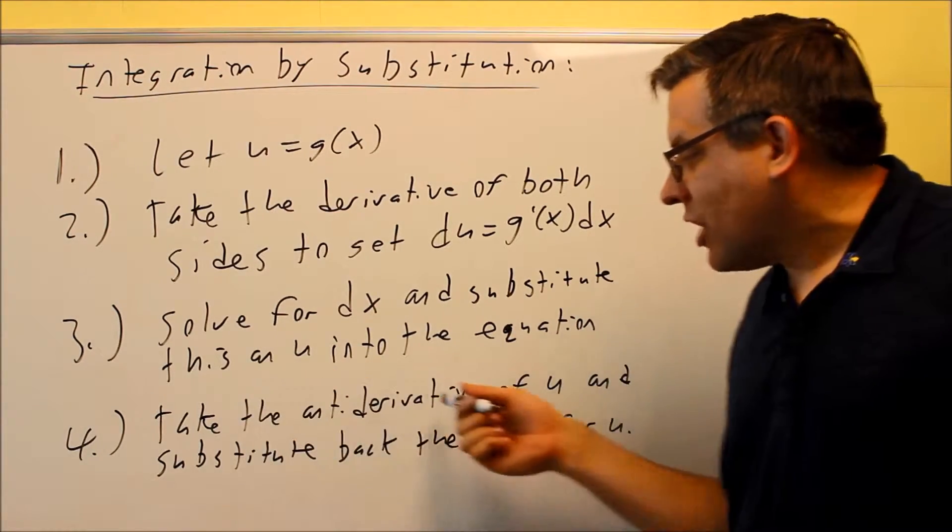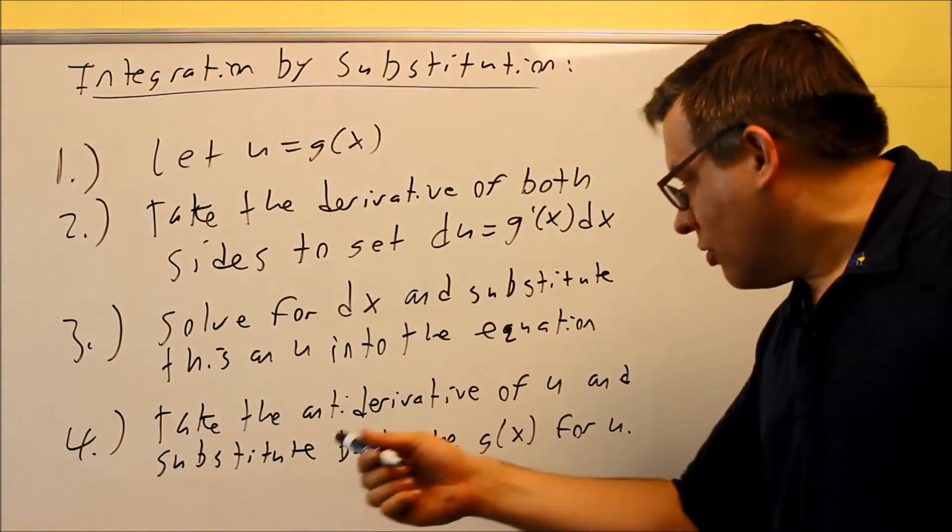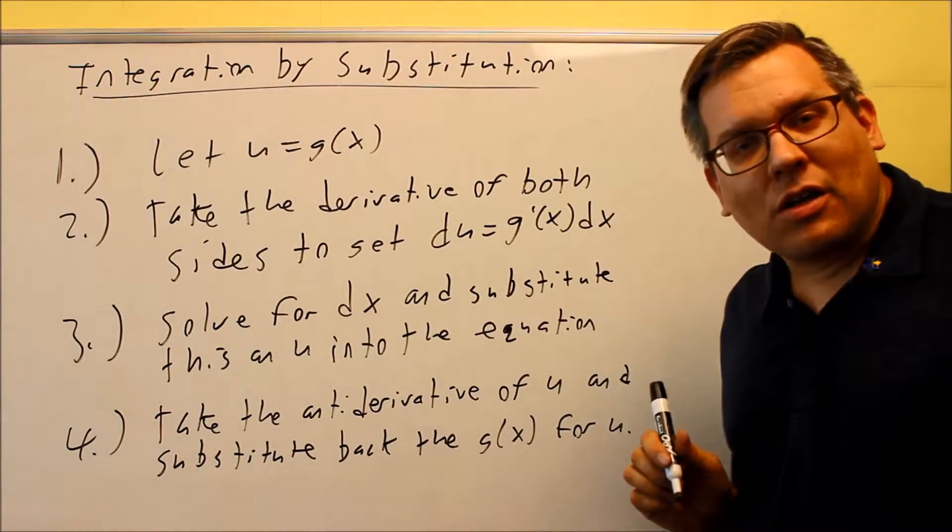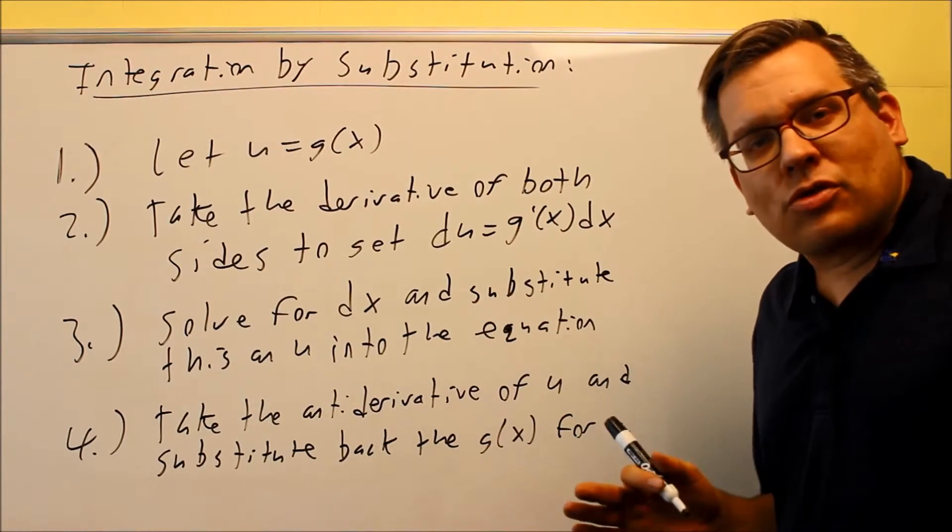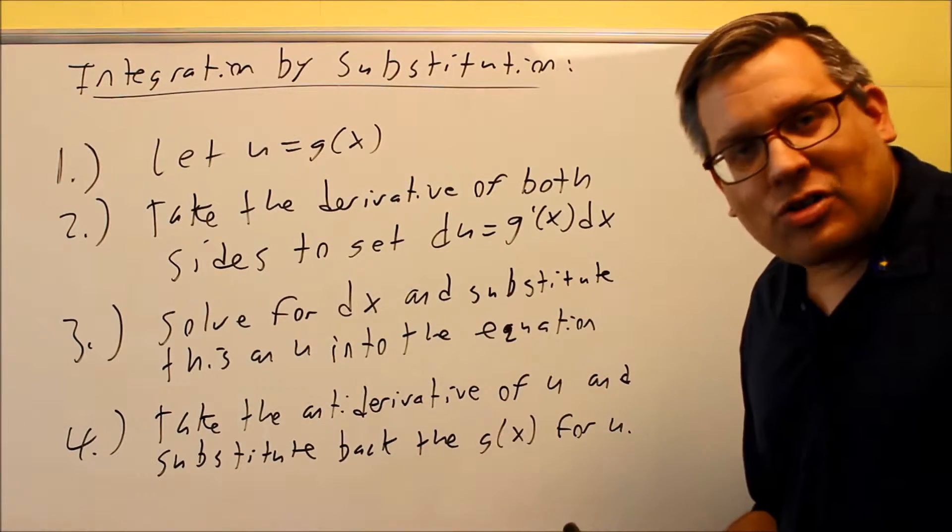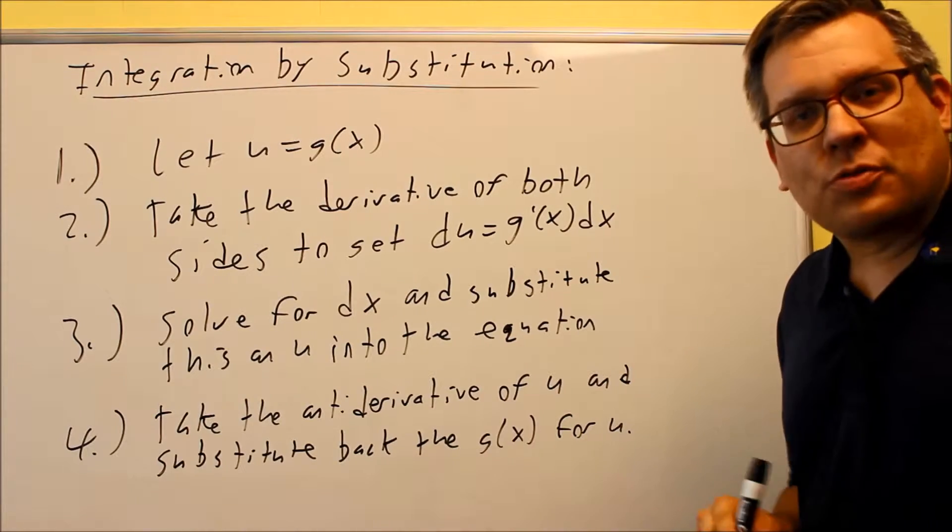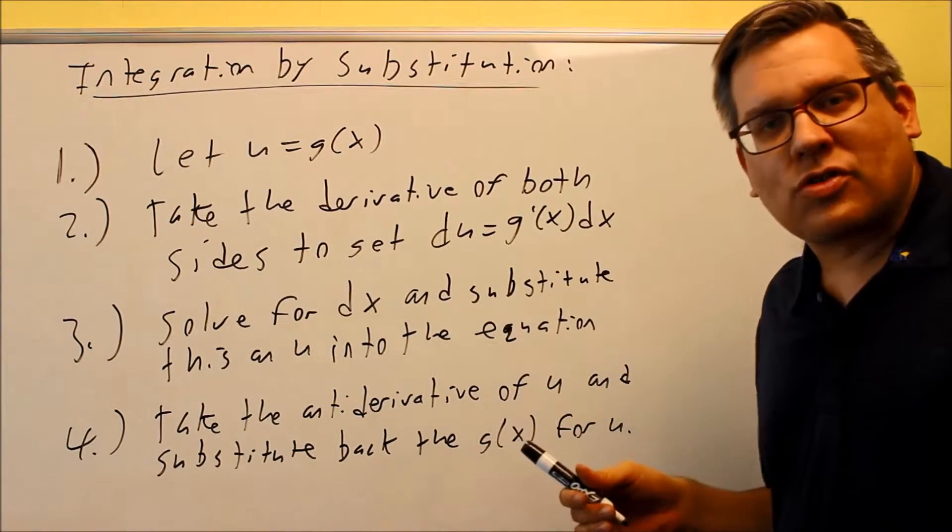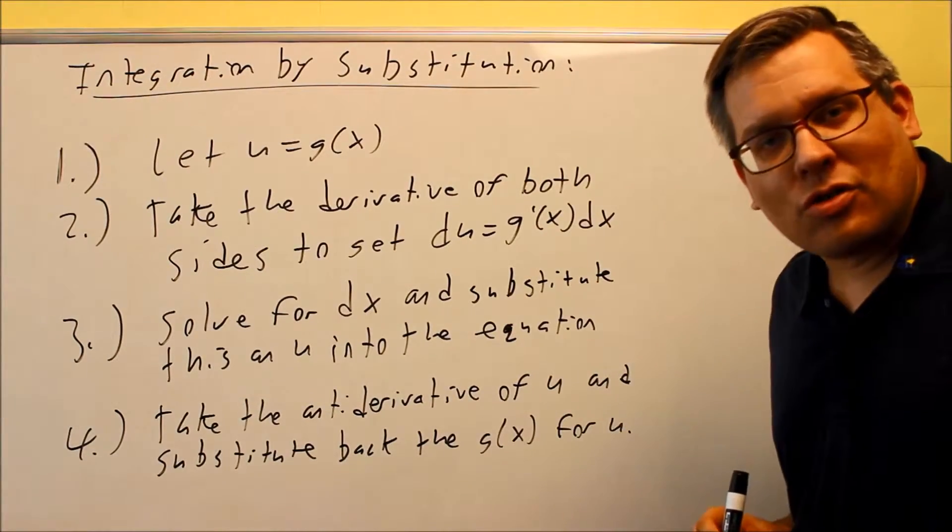Then once you get done with that, you're going to take that antiderivative and then once you're done, you're going to substitute the u and the g(x) back in and that's going to be your answer. So what you're doing here, the idea of substitution is you're changing the problem to something that's easier to integrate, you're going to integrate it and then you're going to put the complicated parts back in. So that's really the whole idea here. You're basically taking something more complicated and putting it into something that's easier to do.